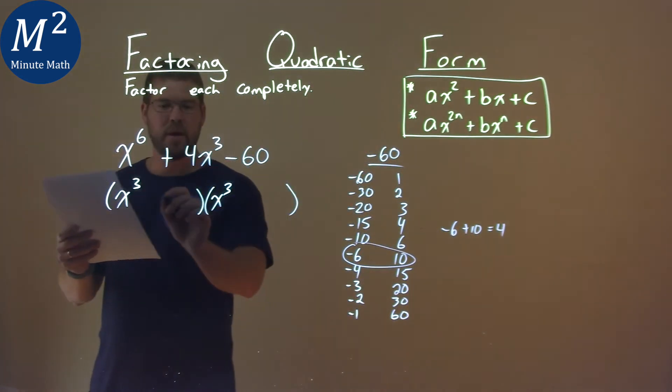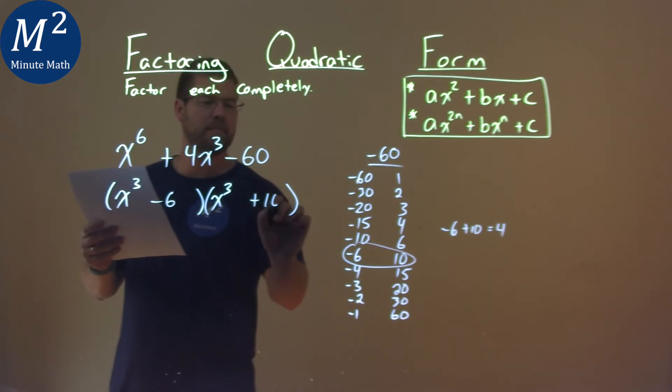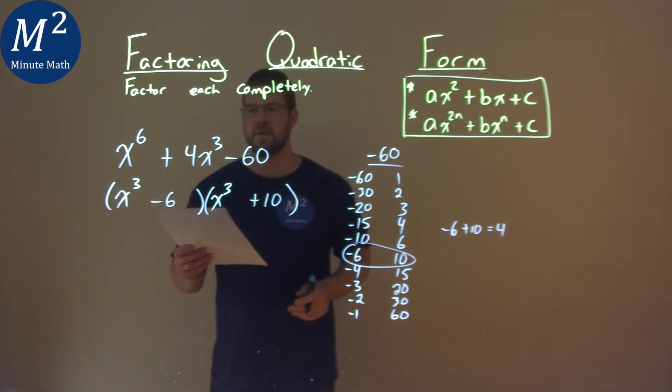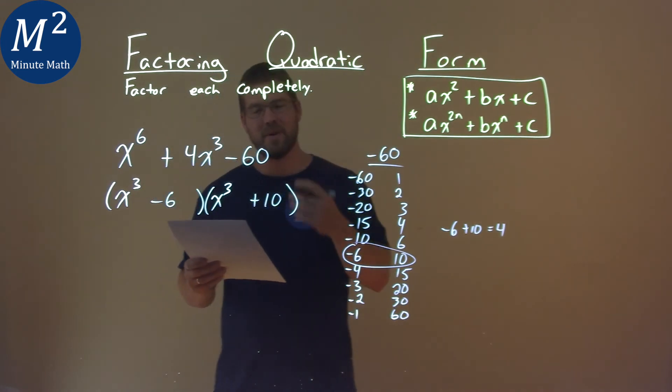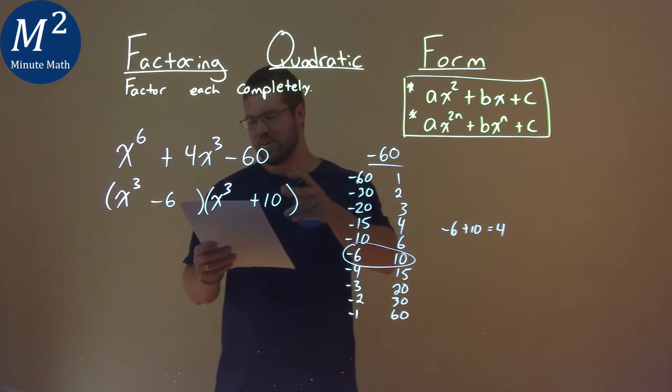So our two values are minus 6 and positive 10. And so, our final answer here is (x^3 - 6)(x^3 + 10).